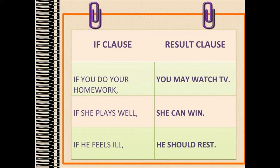We use may in the first conditional to give permission in the future. May is quite formal. If she plays well, she can win. We can also use can in the first conditional to give permission in the future. However, can is more informal. Finally, if he feels ill, he should rest. We use should in the first conditional to give advice in the future.